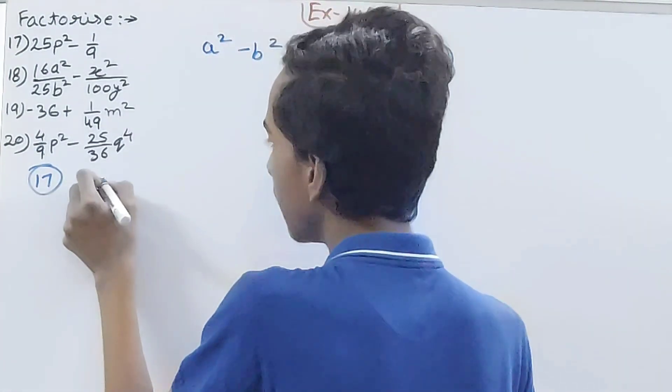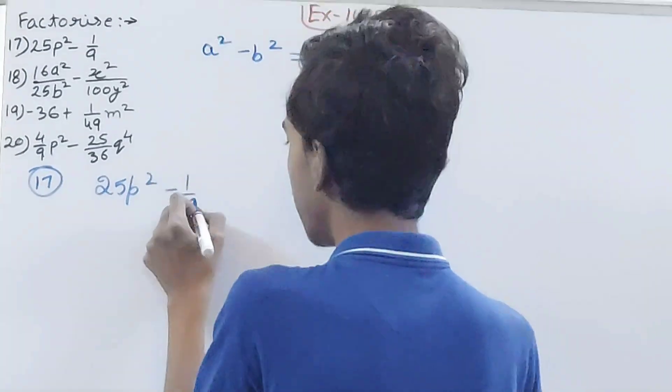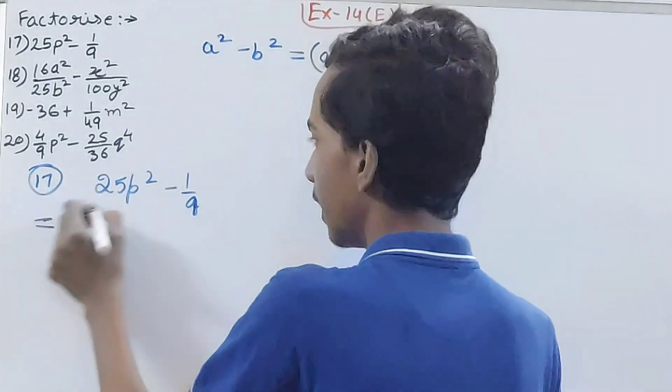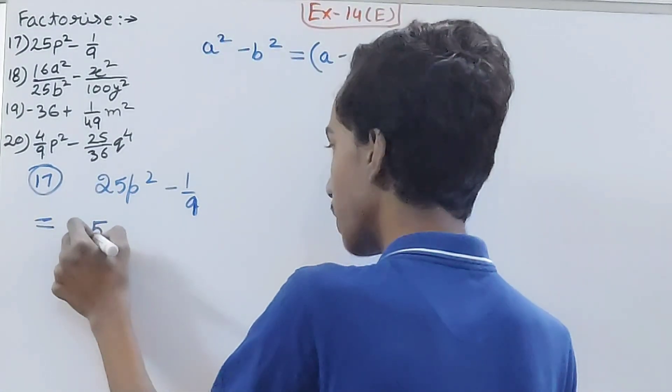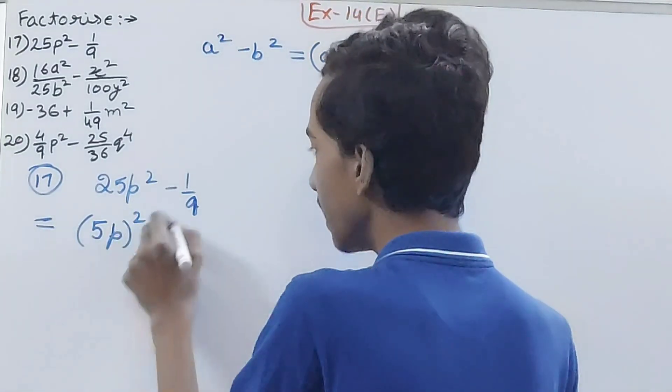This is 1/9, not 1/a. Now see, here this will be what? 25p² can be written as square of 5p, and minus 1/9 can be written as (1/3)².